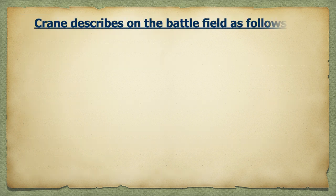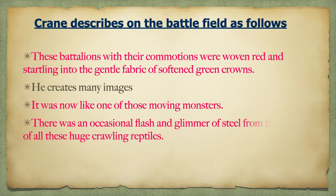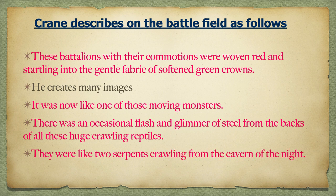Crane describes the battlefield as follows: 'These battalions with their commotions were woven red and startling into the gentle fabric of softened green crowns.' He creates many images: 'It was now like one of those moving monsters. There was an occasional flash and glimmer of steel from the backs of all these huge crawling reptiles. They were like two serpents crawling from the cavern of the night.'